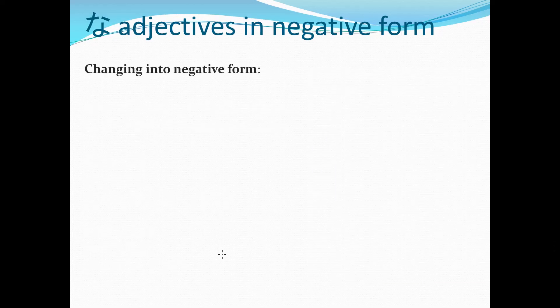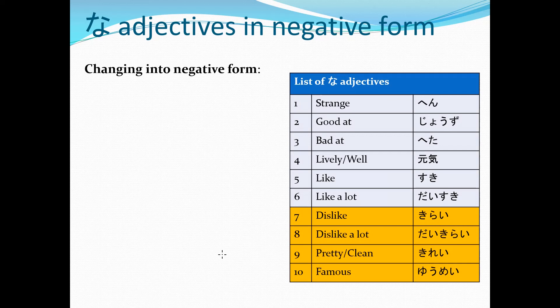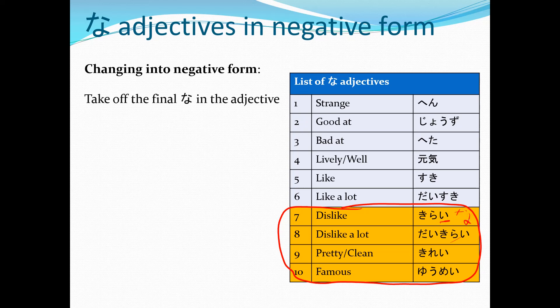Let's have a look at な adjectives now. Here's a list that you can use to practice later on — just pause it and have a go. Pretty straightforward though. Just be really careful with these ones, because they look like イ adjectives, but they're not. They're being really deceptive — they have an イ at the end, but in fact there's an extra な there. So just remember them off by heart, really. I know it's annoying, but you'll be fine. Trust me.